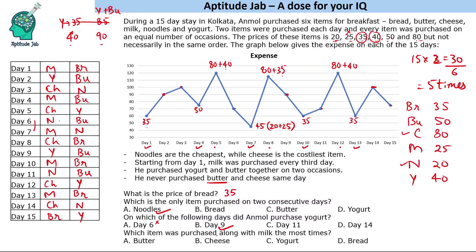On which day did Anmul purchase yogurt? From the options, day 9 is where he purchased yogurt; days 11 and 14 are not yogurt. Which item was purchased along with milk the most times? Looking at the combinations with milk, bread appears most — milk and bread were purchased together on three occasions. That completes the solution. It was not too difficult; you just needed to build a table to find which items were purchased on each day.